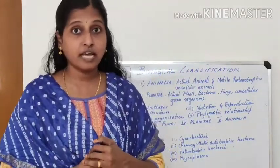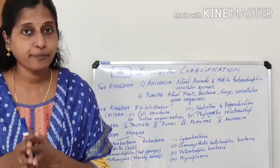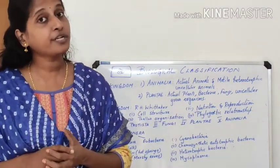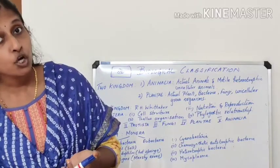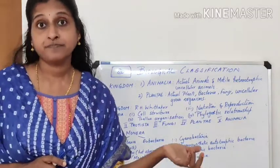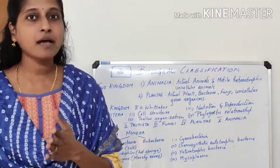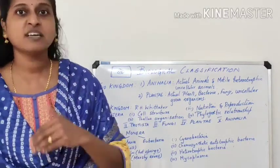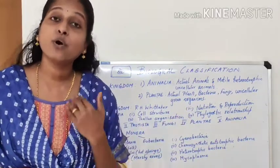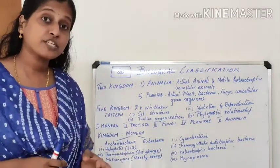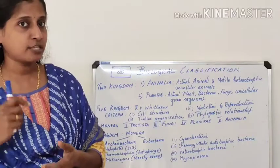The third criterion is mode of nutrition and reproduction. We must find out whether the organism is autotrophic — able to prepare its own food — or heterotrophic — depending on others for food. Plants with chlorophyll are autotrophic; we humans cannot prepare our own food so we are heterotrophic. For reproduction, we check whether it is vegetative propagation, asexual reproduction, or sexual reproduction.